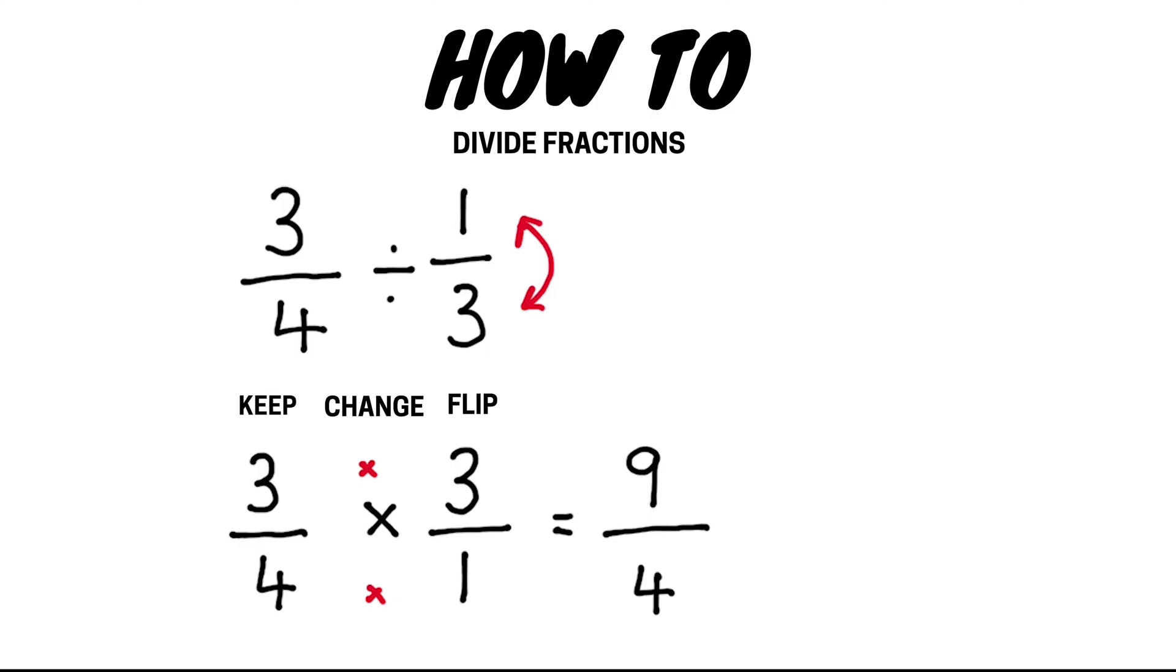As an improper fraction our answer is nine quarters or nine over four, but we can also write this as the mixed fraction two and one quarter.